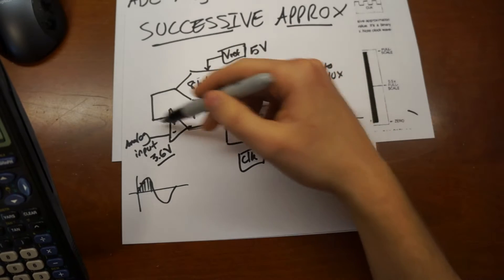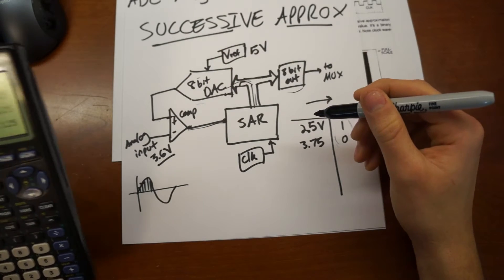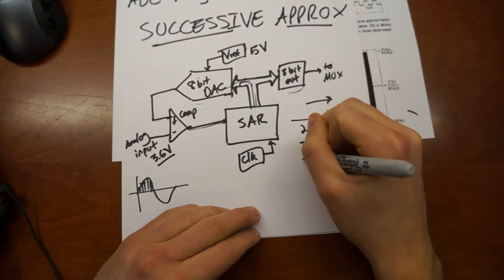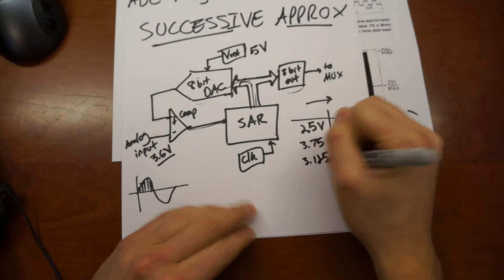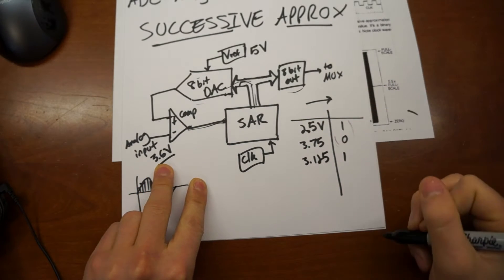And so that value is compared, so the next value is 3.125, and our input voltage is greater than that, so we get another 1.